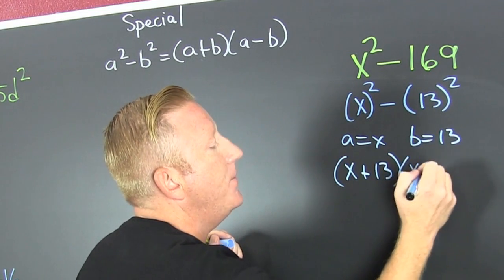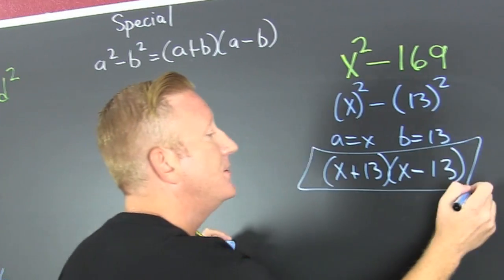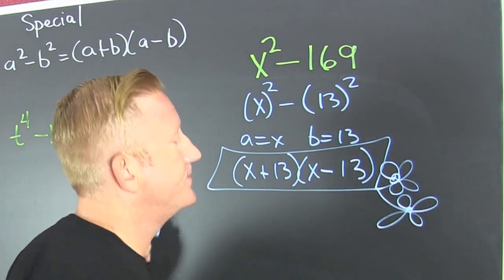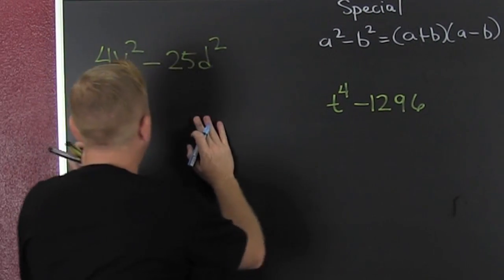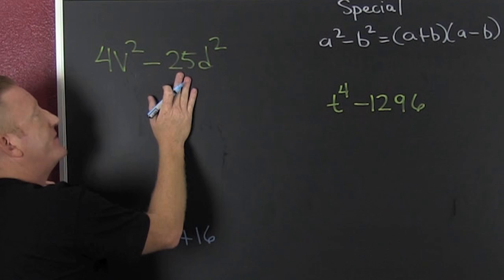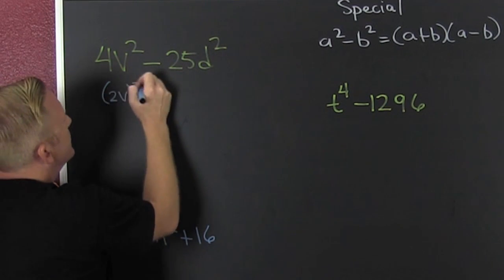Another one. Do I have the difference of two squares? Sure. This one is 2v squared minus 5d squared.